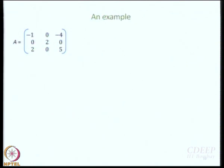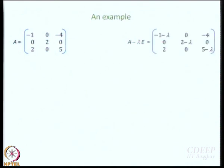Let us work out this example from Bishop's book. This is the matrix A. The first step is to find A minus lambda E. A minus lambda E gives us: (−1−λ), 0, −4 in the first row; 0, (2−λ), 0 in the second row; 2, 0, (5−λ) in the third row. This is your A minus lambda E matrix.